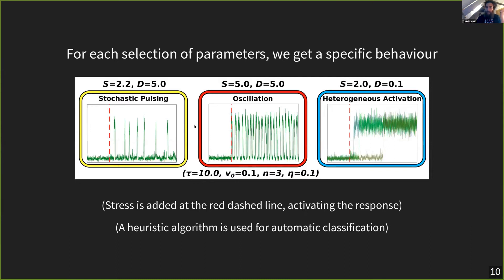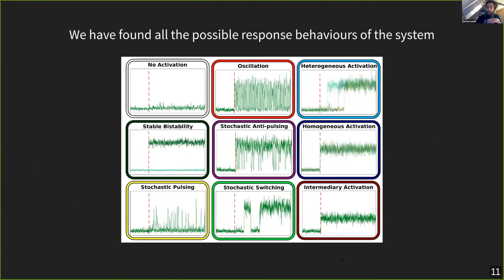Here I've plotted a few different behaviors we can see. The red dashed line marks the addition of stress. Typically with no stress, the system is always inactive. Then you add stress and some behavior emerges. For some parameters you get stochastic pulsing, but if you increase S — making the system self-activate much more strongly — you get an oscillating behavior, moving into a limit cycle, which is not surprising given the delayed negative feedback. If you reduce D, self-deactivation, you get an activation behavior where the system moves from an inactive state up into an active state. We've been able to classify all the different response types this model can generate — about 10 distinct behaviors depending on how granularly you define them.